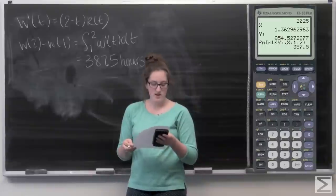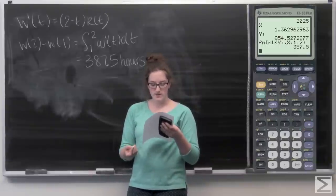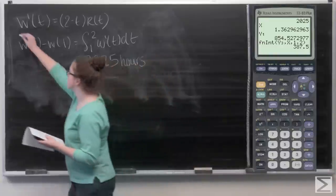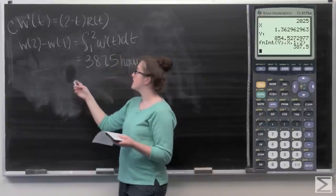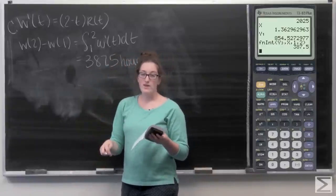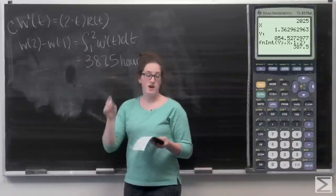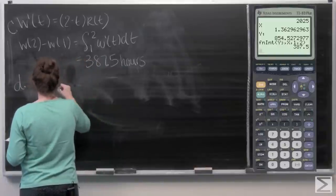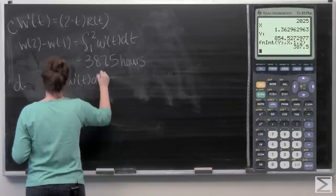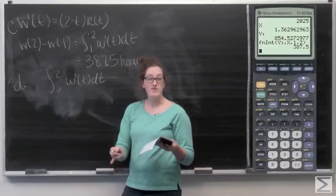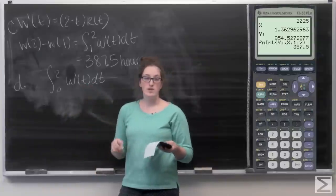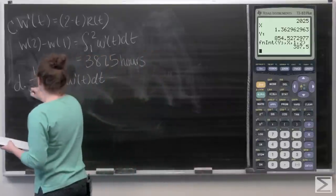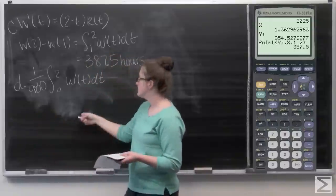Part D asks: on average, how long does a person wait in the auditorium before the concert begins, considering all people who enter after the doors open? I perform almost the same integral as Part C but from 0 to 2 instead of 1 to 2. This time I want the average, so I divide the total wait time by the total number of people in the auditorium at t equals 2, which I found in Part A to be 980.